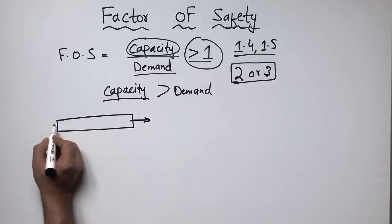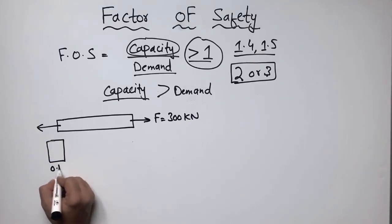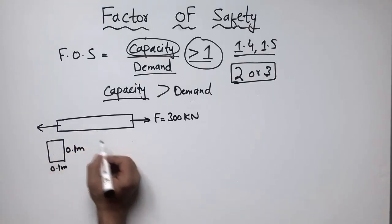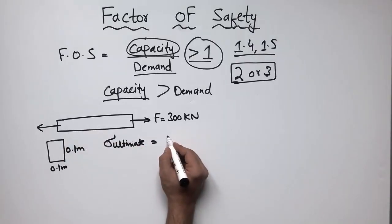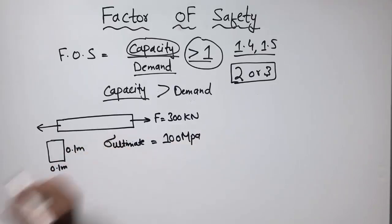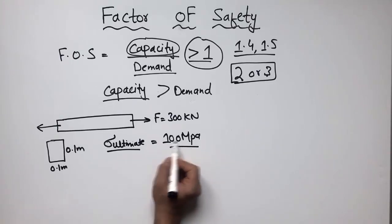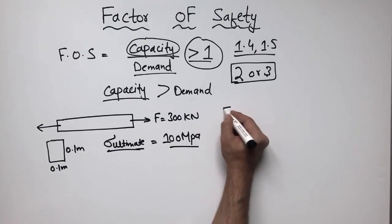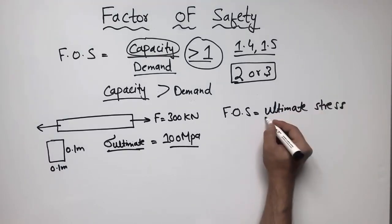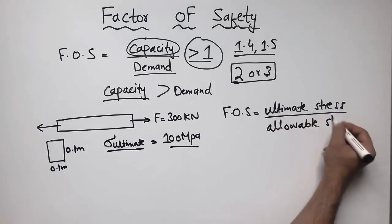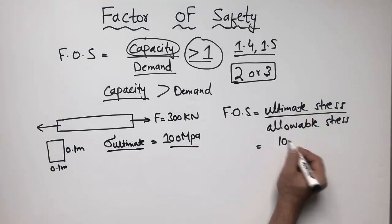Let's suppose this is a steel bar being pulled in tension on both sides with a force equal to 300 kilonewtons. The cross-section of this steel bar is 0.1 m × 0.1 m. The ultimate capacity of this steel bar is 100 megapascals — the maximum stress it can take. We want to find the factor of safety.